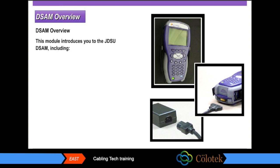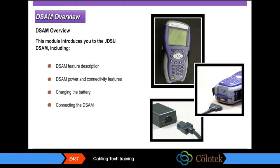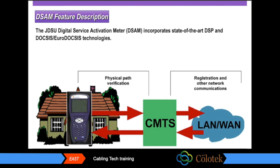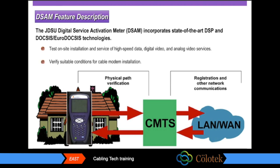This module introduces you to the JDSU DSAM including DSAM feature description, DSAM power and connectivity features, charging the battery, connecting the DSAM, and interpreting the charge LED. The JDSU Digital Service Activation Meter, or DSAM, incorporates state-of-the-art DSP and DOCSIS and EuroDOCSIS technology. The DSAM will connect to the CMTS to check for installation of high-speed data, digital video, and analog video services to verify suitable conditions for cable modem installations.